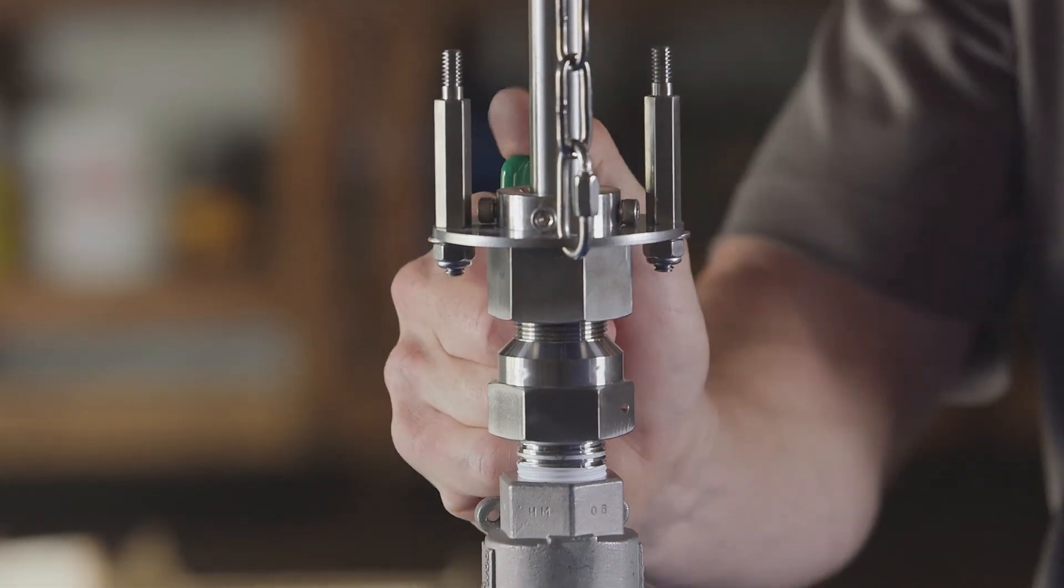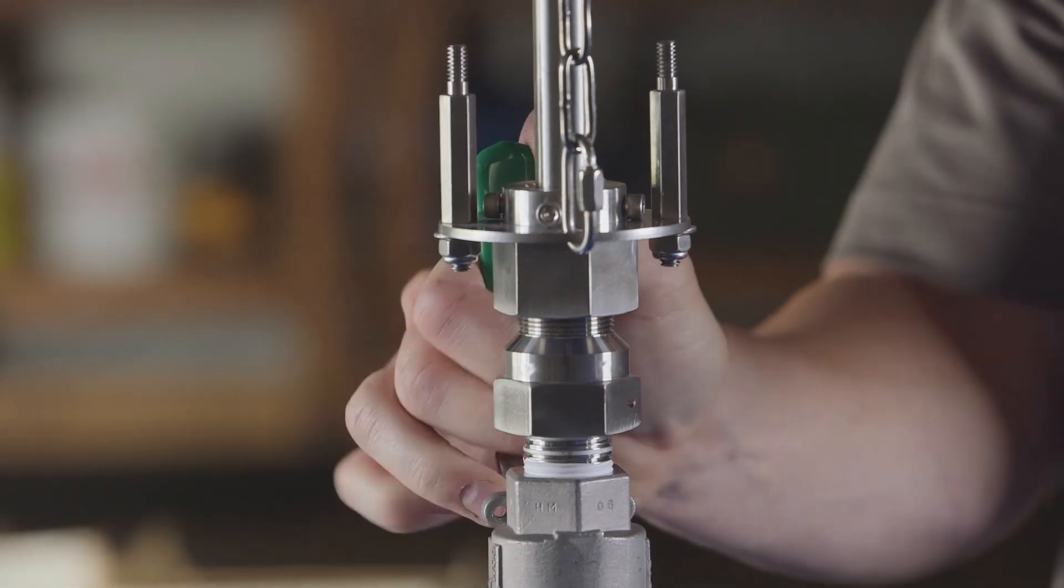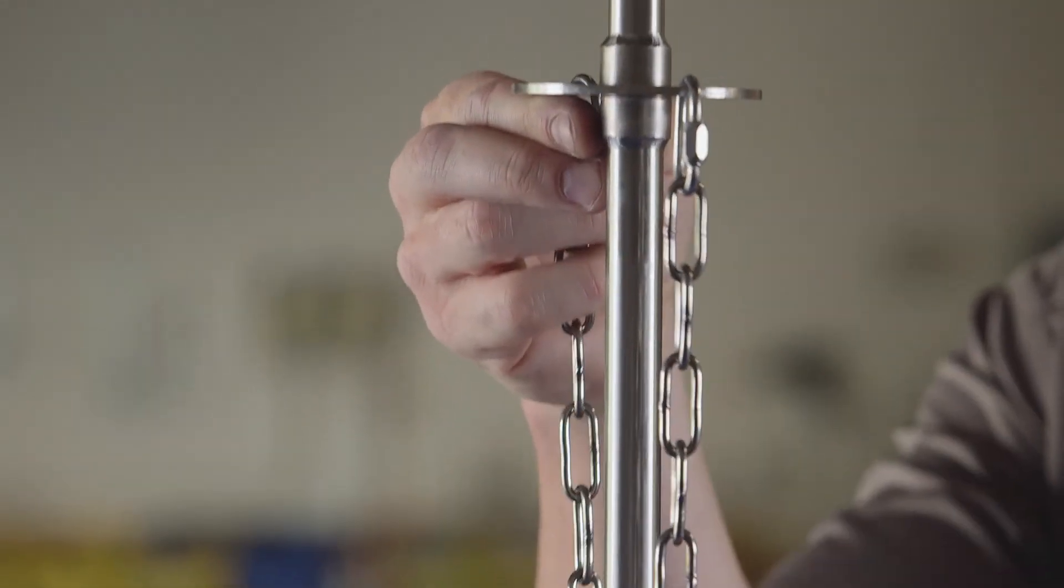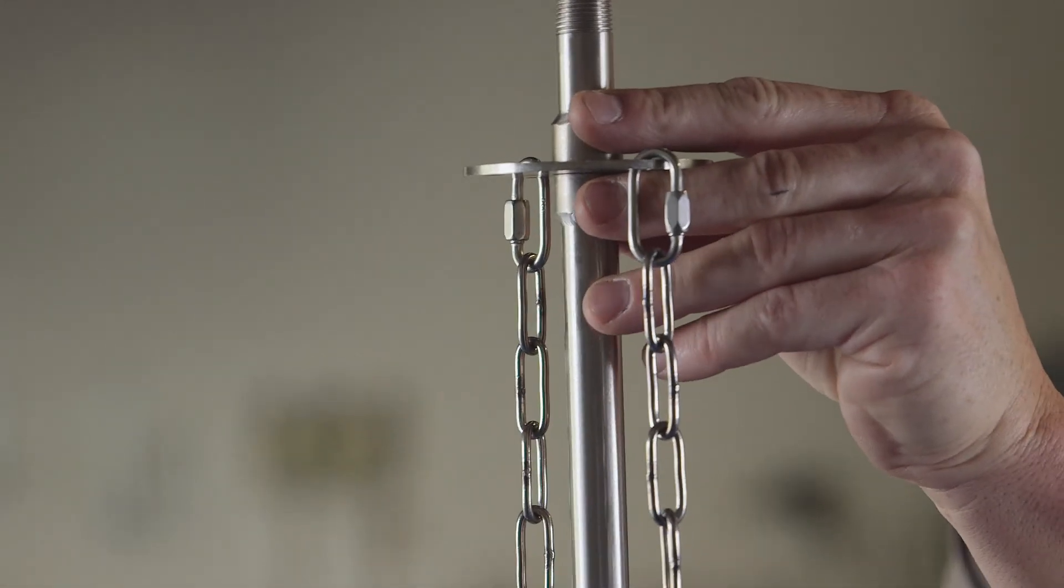Close the ball valve. If the valve will not close, ensure the solution tube has been retracted far enough so the tip of the tube is not obstructing the valve from closing.